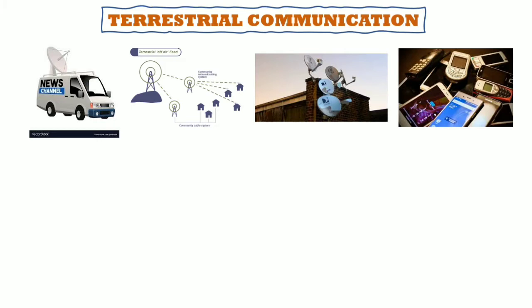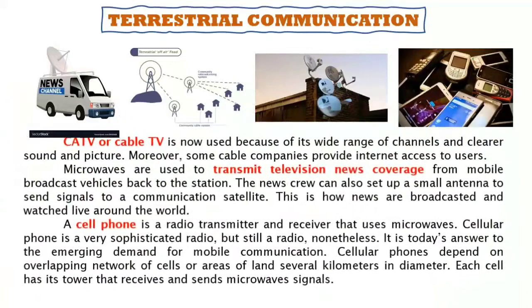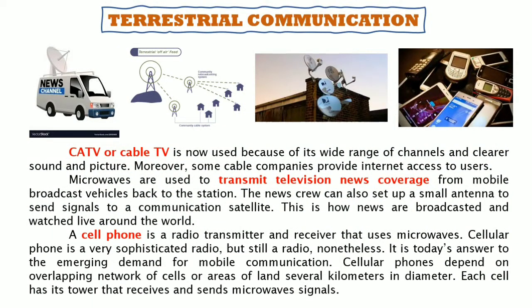Another application is terrestrial communication — meaning land-based communication. CATV or cable TV is now widely used because of its wide range of channels and clearer sound and picture, and some cable companies also provide internet access. Microwaves are used to transmit television news coverage from mobile broadcast vehicles back to the station. The news crew can also set up a small antenna to send signals to a communication satellite, allowing news to be broadcasted and watched live around the world.